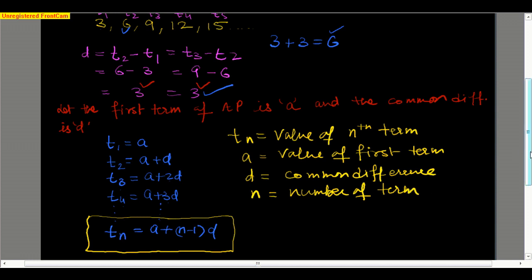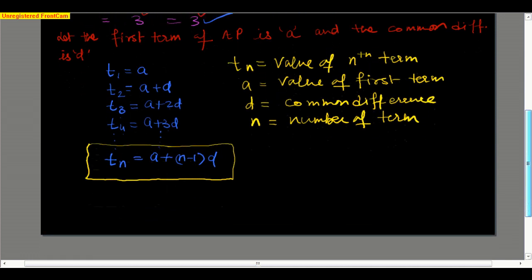Through this formula, if we know any three of the four variables, we can easily find out the fourth one.